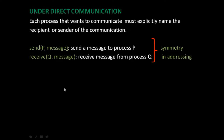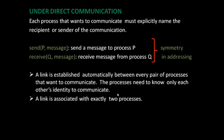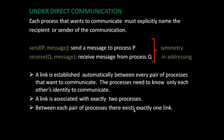Because of this symmetry, a link is established automatically between every pair of processes which want to communicate — they need to know only each other's identity. A link is associated with exactly two processes, and between each pair of processes there exists exactly one link.